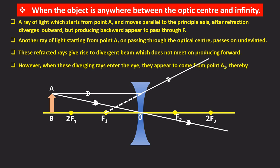However, when these divergent rays enter the eye they appear to come from point A1 thereby forming a virtual image A1 B1 between O and F1.